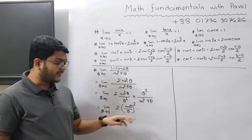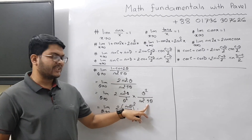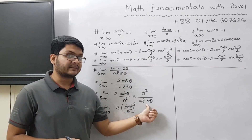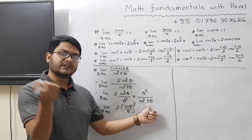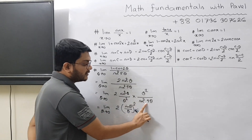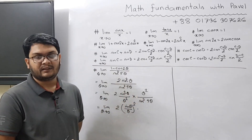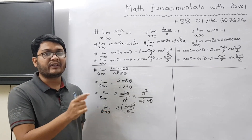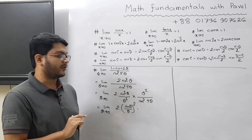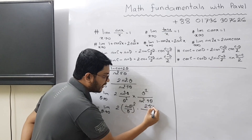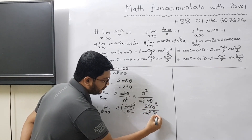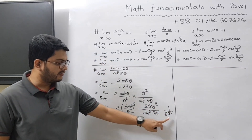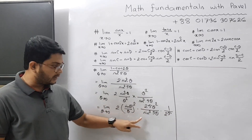Now, what about the denominator part theta square divided by sin square 5 theta? We cannot write it as theta by sin 5 theta whole square because we have 5 theta, not theta. According to the concept from lecture 11, the primary task is to adjust this theta. When you have 5 theta, you square it to get 25. So in the numerator you need 25 theta square, because 25 theta square can be written as 5 theta whole square. So we write 25 theta square divided by sin square 5 theta. Since we multiplied by 25, we also divide by 25.